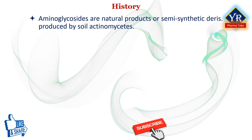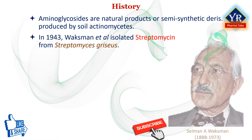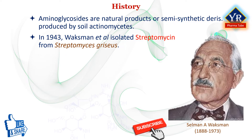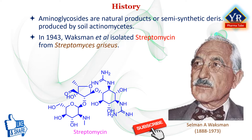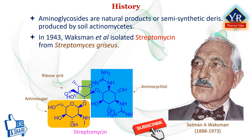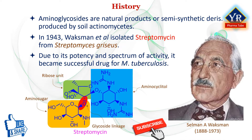Aminoglycosides are natural products or semi-synthetic derivatives of compounds produced by a variety of soil actinomycetes. In 1943, Wachsman and colleagues isolated a potent antibacterial compound, streptomycin, from a Streptomyces species known as Streptomyces griseus. This substance, streptomycin, contains an aminoglycetol and an amino sugar joined to a ribose unit. Due to its potency and spectrum of activity, streptomycin became a successful drug for the treatment of mycobacterial infections, for example, tuberculosis. Because of this property, researchers invested efforts to look for other structurally related compounds elaborated by other Streptomyces sources, and a family of potent antibacterial aminoglycosides followed.